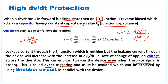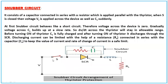This unwanted triggering of the SCR can be avoided by using a snubber circuit — dv/dt protection is achieved through a snubber circuit. A snubber circuit consists of a capacitor Cs connected in series with a resistor Rs, placed in parallel with the thyristor.